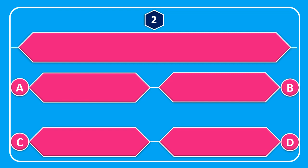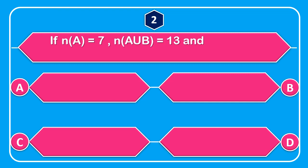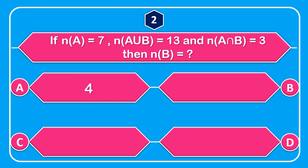Question number 2: If N of A is equal to 7, N of A union B is equal to 13, and N of A intersection B is equal to 3, then N of B is equal to — A: 4, B: 5, C: 6, D: 9.